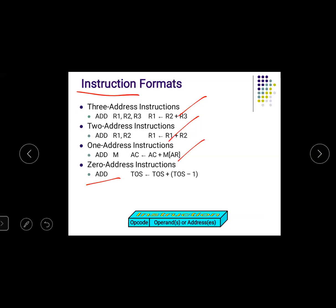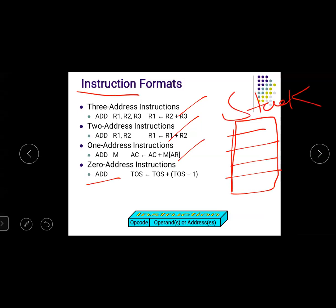In a zero-address instruction, the instruction does not contain any address because the data is available in a stack. The stack contains two data items — for example, 100 and 200. The stack is like a memory storage device operating on a last-in, first-out basis.